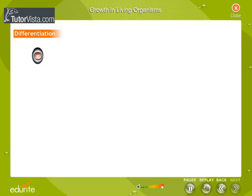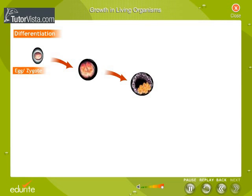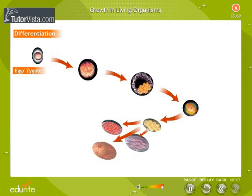All living organisms start off as a single cell — the fertilized egg, or zygote. This divides into two cells, then to four, then to eight, sixteen and so on. The cells eventually change their shape and structure to form a particular type of cell with a well-defined function.